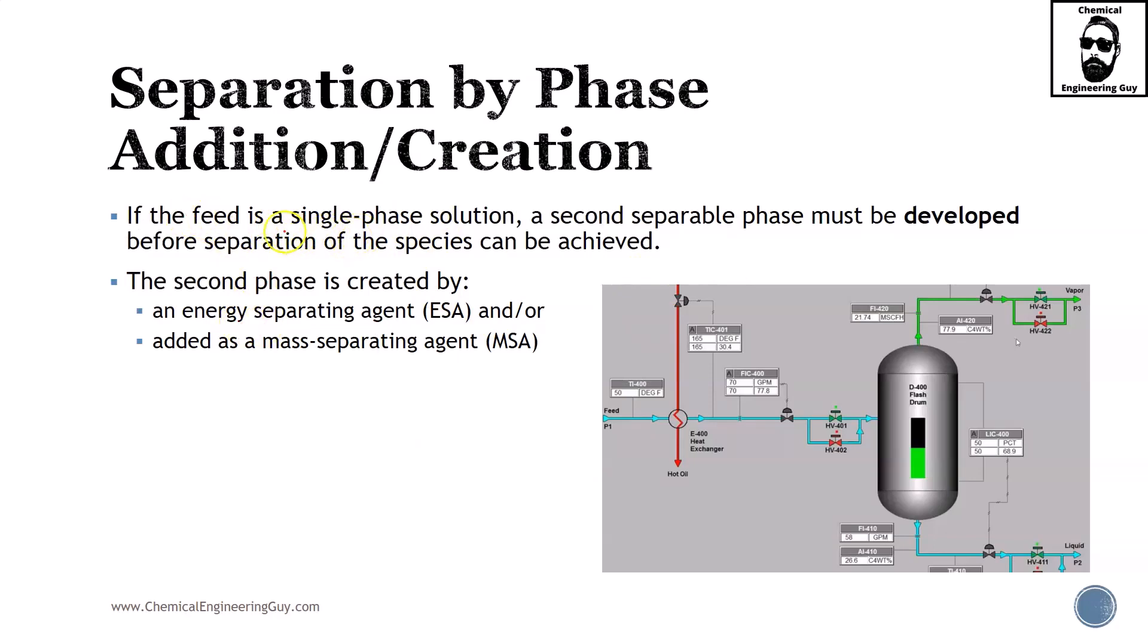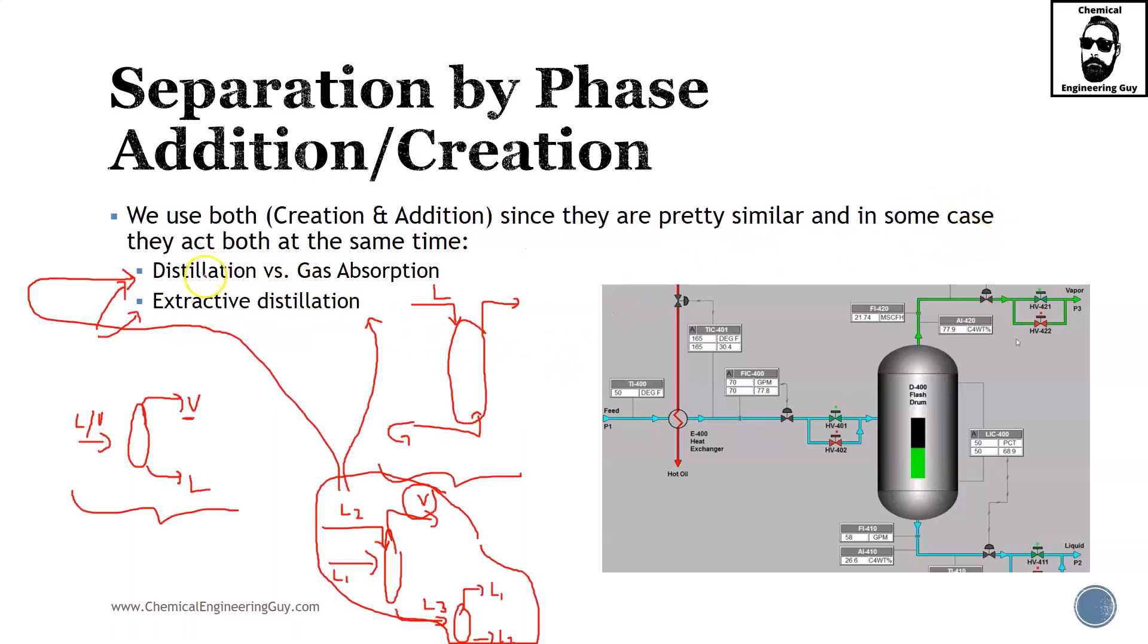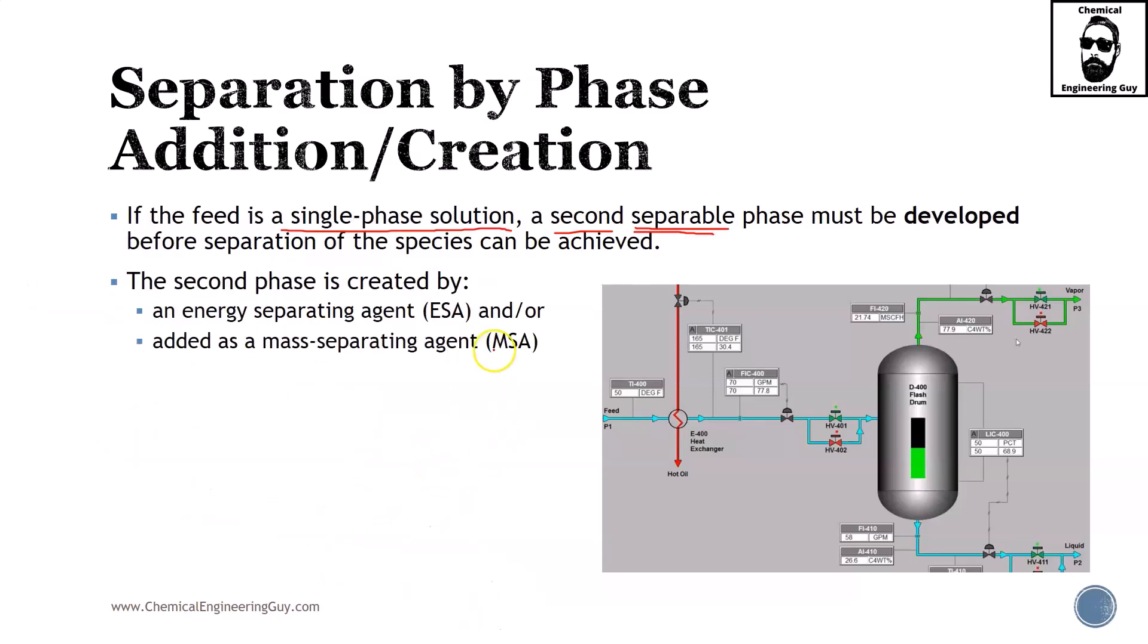If the feed is a single phase solution, a second separable phase must be developed. In distillation you need to create a vapor, in gas absorption you need to add a liquid, in extractive distillation you need to add an entrainer. So a second phase which must be separable must be developed. This is the main scope in both phase creation and addition.